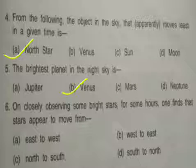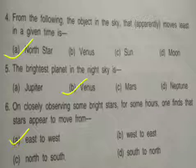Sixth: On closely observing some bright stars for some hours, one finds that stars appear to move from — options are: A, east to west; B, west to east; C, north to south; D, south to north. The correct option is east to west. Thank you.